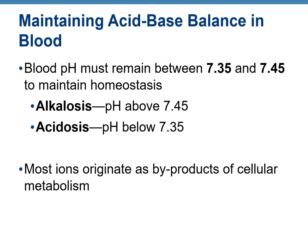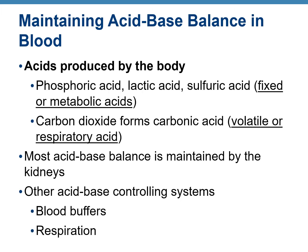Normal blood pH is between 7.35 and 7.45, which is slightly alkaline — the pH required to maintain homeostasis. If blood pH rises above 7.45 it is alkalosis; if it falls below 7.35 it is acidosis. Most of the acid-base balance in the body is controlled by the kidneys.